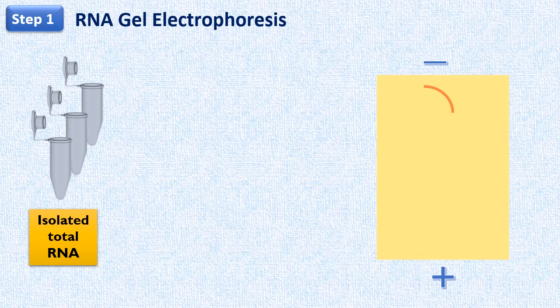The first step in Northern blotting is RNA gel electrophoresis. The RNA molecules isolated from cells are separated according to size by gel electrophoresis. RNA molecules are negatively charged, so they move from negative to the positive electrode during gel electrophoresis.